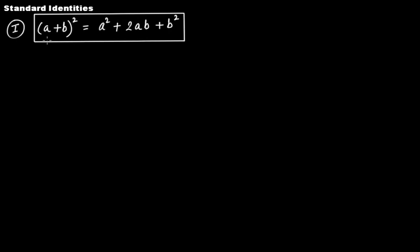The first standard identity says that (a + b) whole squared is equal to a squared plus 2ab plus b squared. Now let's see the proof of it.